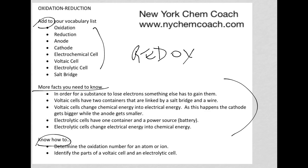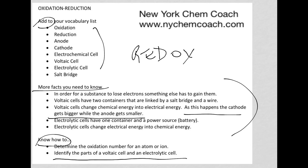I did add a little bit — for example, the cathode getting bigger while the anode gets smaller for a Voltaic cell, because it has shown up in the past. Also here at the bottom, one of the 2015 questions required you to know to fill in 'battery' for electrolytic cell, but it's important that you know the parts of the Voltaic cell and the electrolytic cell. Again, most of this information — almost all of it — came from going through the 2015 questions.